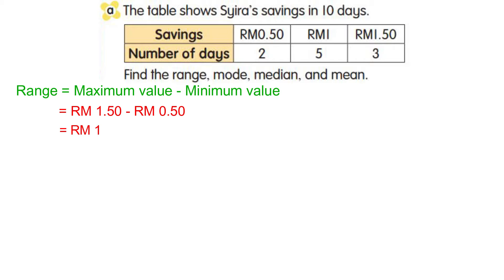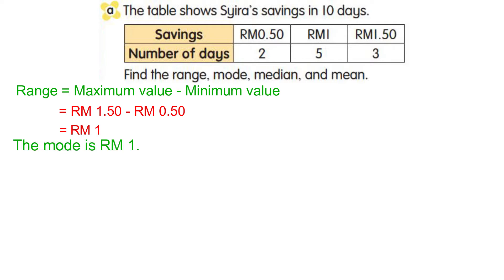To find the mode, find the highest frequency for the number of days. From the table, Shira saved 1 ringgit for 5 days, so the mode will be 1 ringgit.